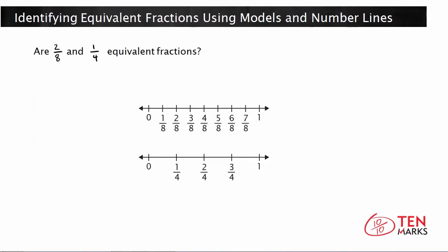Let's try another problem together. Are two eighths and one fourth equivalent fractions? We're going to use number lines to help us understand. Starting with the top number line, in the space between zero and one, we've made eight different divisions — one through eight. There are eight spaces, which means I can use this top number line to show two eighths. I start at zero and go through two of those eight divisions, and I land right here on two eighths.